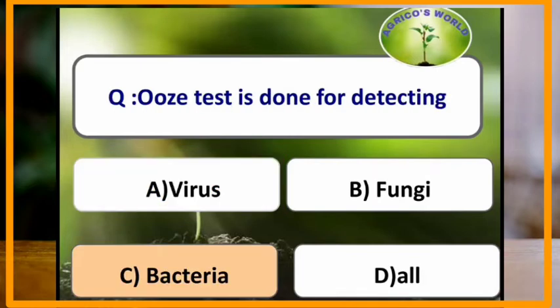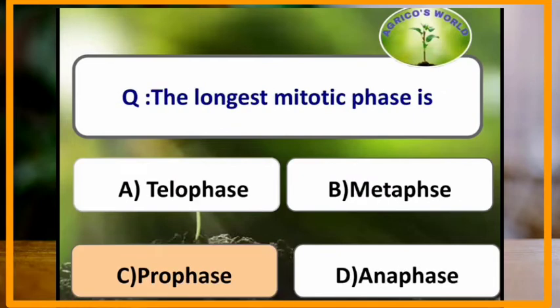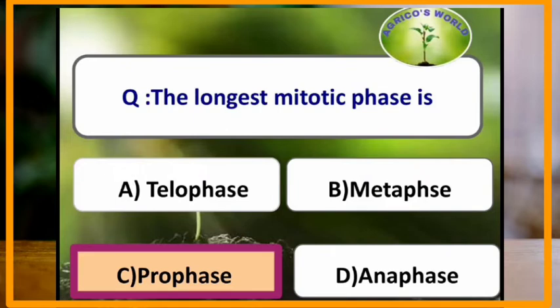Ooze test is done for detecting which microorganism? Ooze test is done for detecting the presence of bacteria. The longest mitotic phase is prophase — among all the phases in mitotic division, prophase is the longest phase.